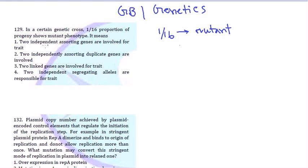In all those options you can see terms like independent assorting genes, independent assorting duplicate genes, and independent segregating alleles. You need to learn what independent assortment means — it is very important. Independent assortment is a rule from classical genetics by Gregor Mendel. He proposed two laws: the law of segregation and the law of independent assortment.